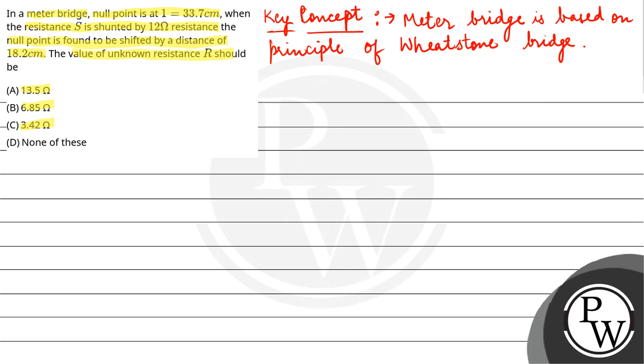If we talk about the resistance wire, it is 1 meter, that is why it is called meter bridge. Its length is 1 meter. And here you have two resistances attached.